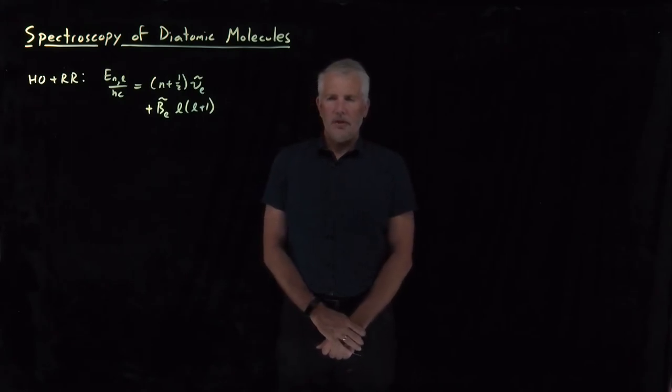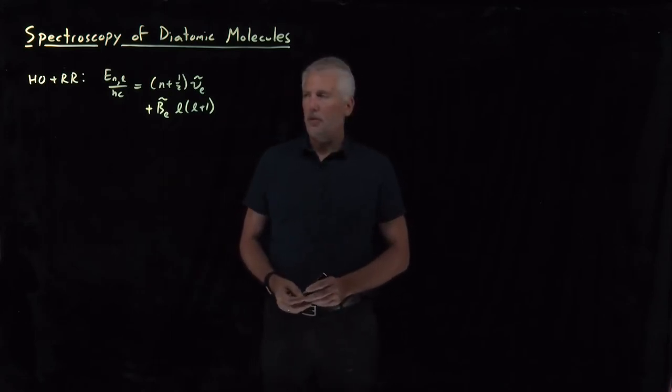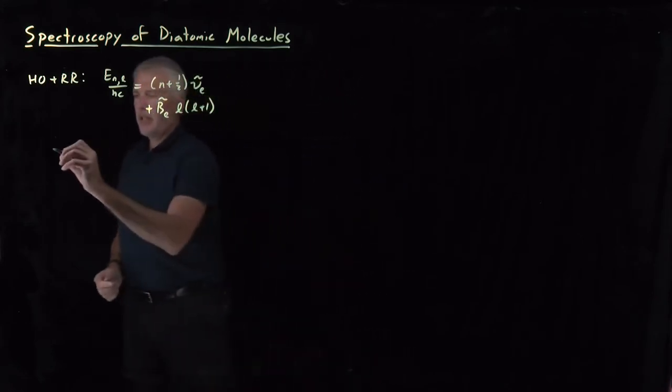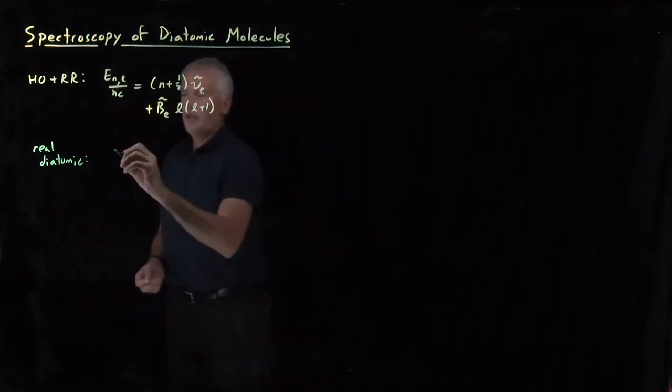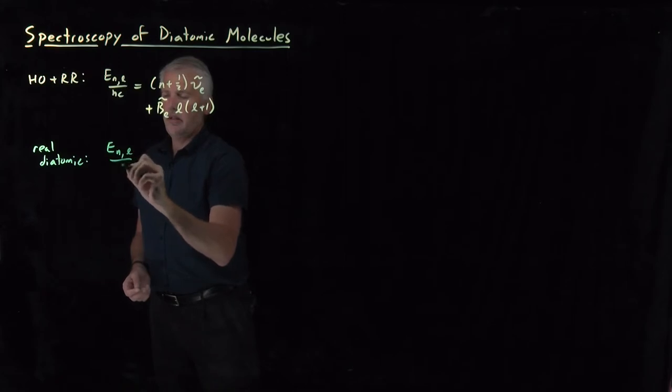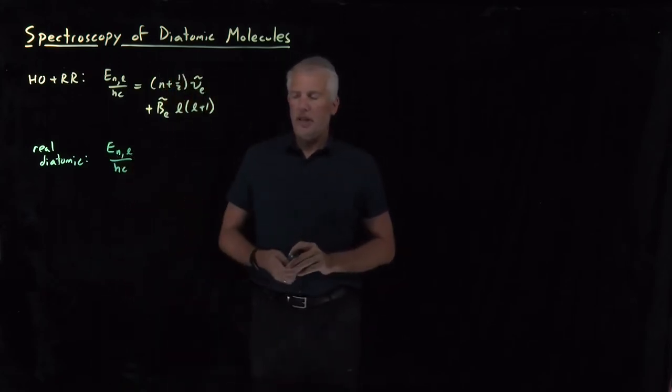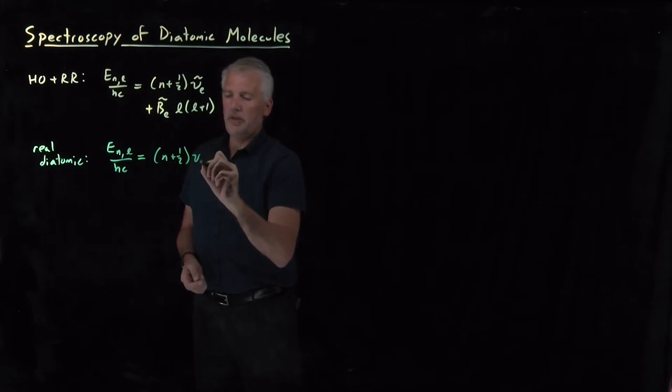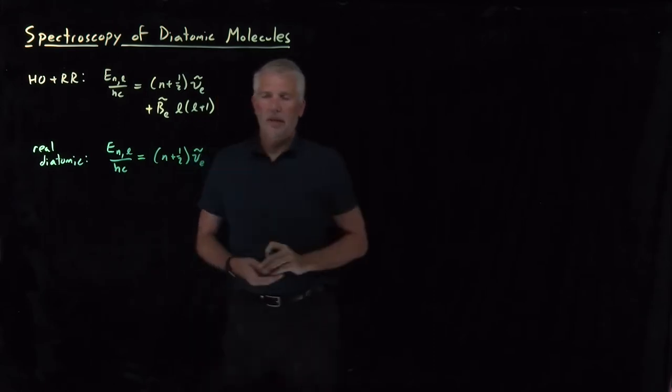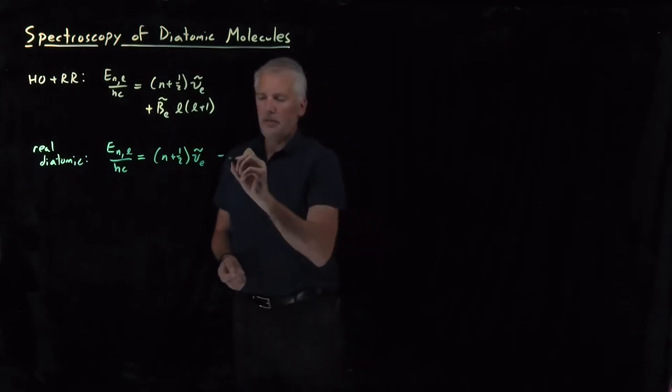So now we're in a position to do significantly better than just the harmonic oscillator and rigid rotor approximation for describing diatomic molecules. Real diatomic molecules aren't perfectly harmonic and aren't rigid, so we know now we can write the energy of a particular vibrational state and rotational state using not just the harmonic oscillator approximation, which gives us this n plus 1/2 h nu or n plus 1/2 vibrational frequency in wave numbers, but with a correction for anharmonicity.